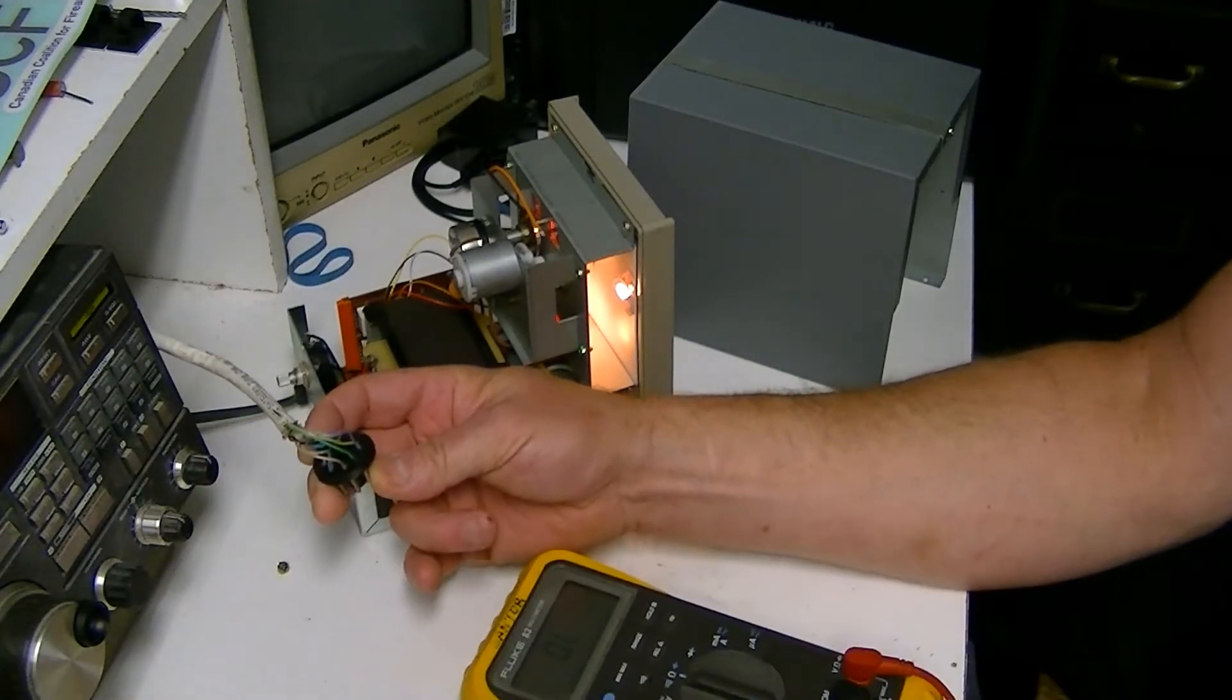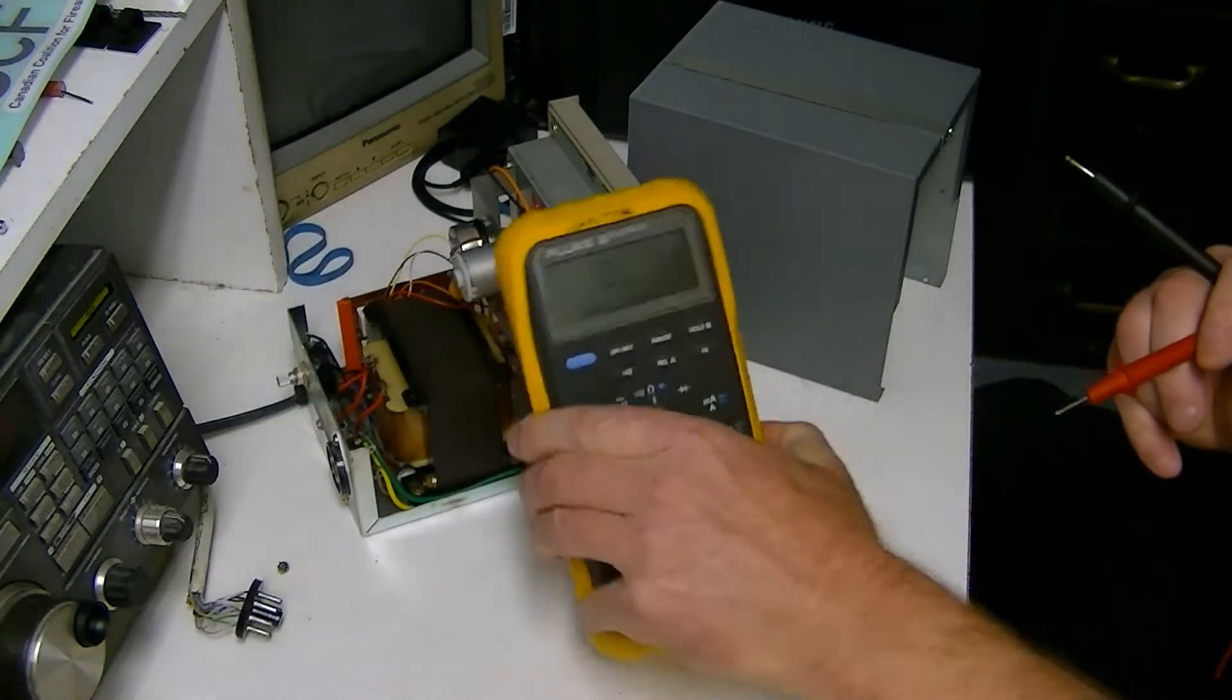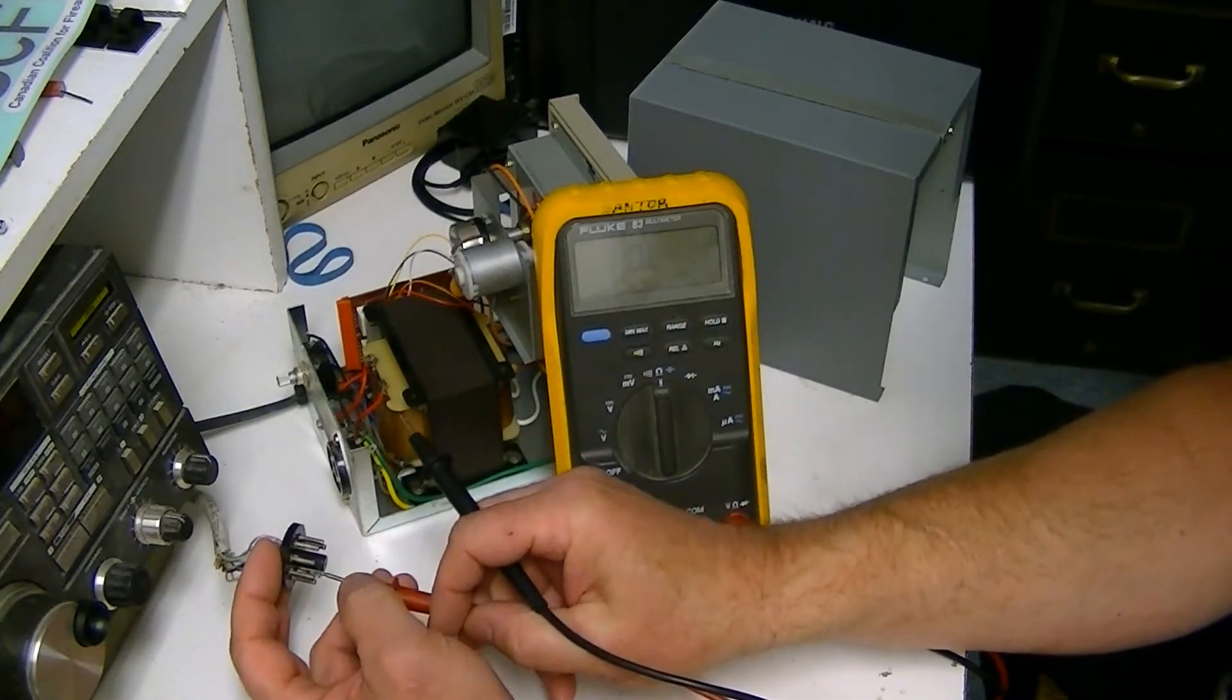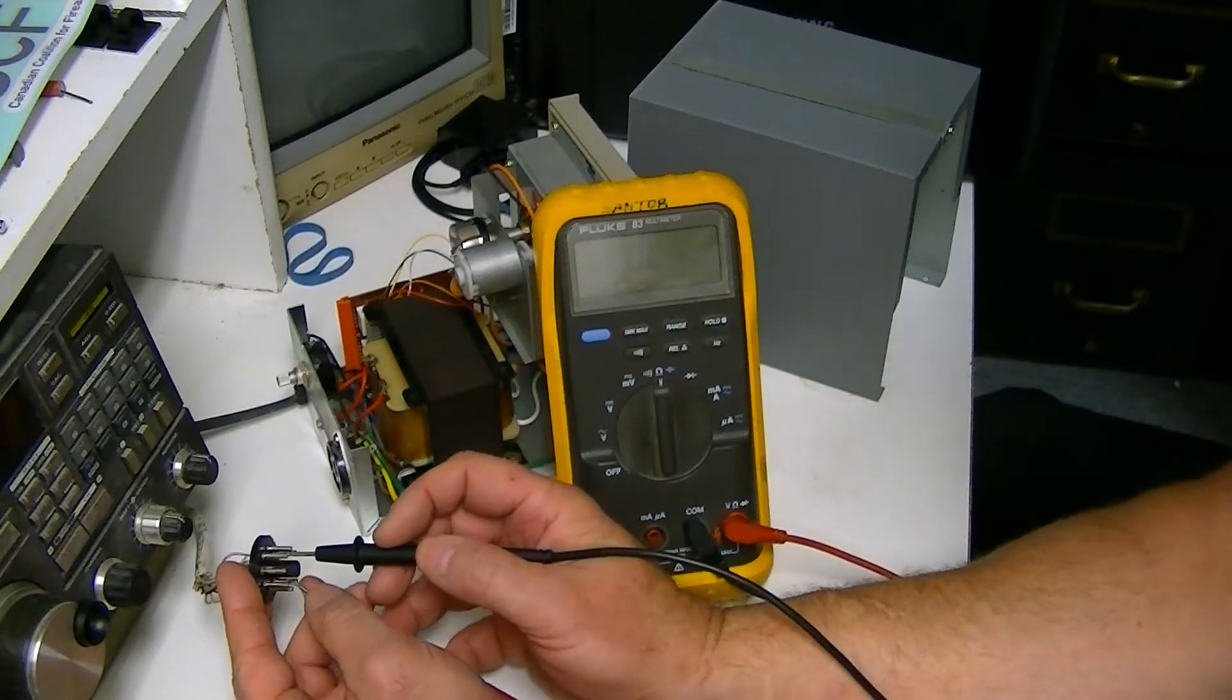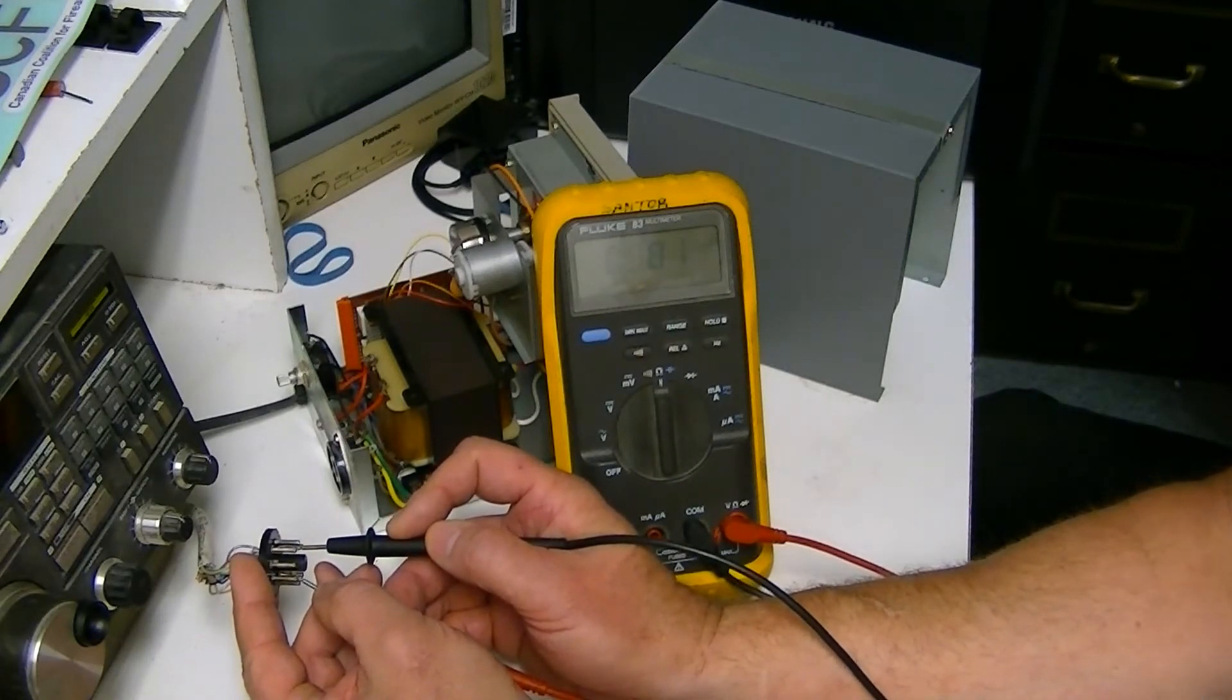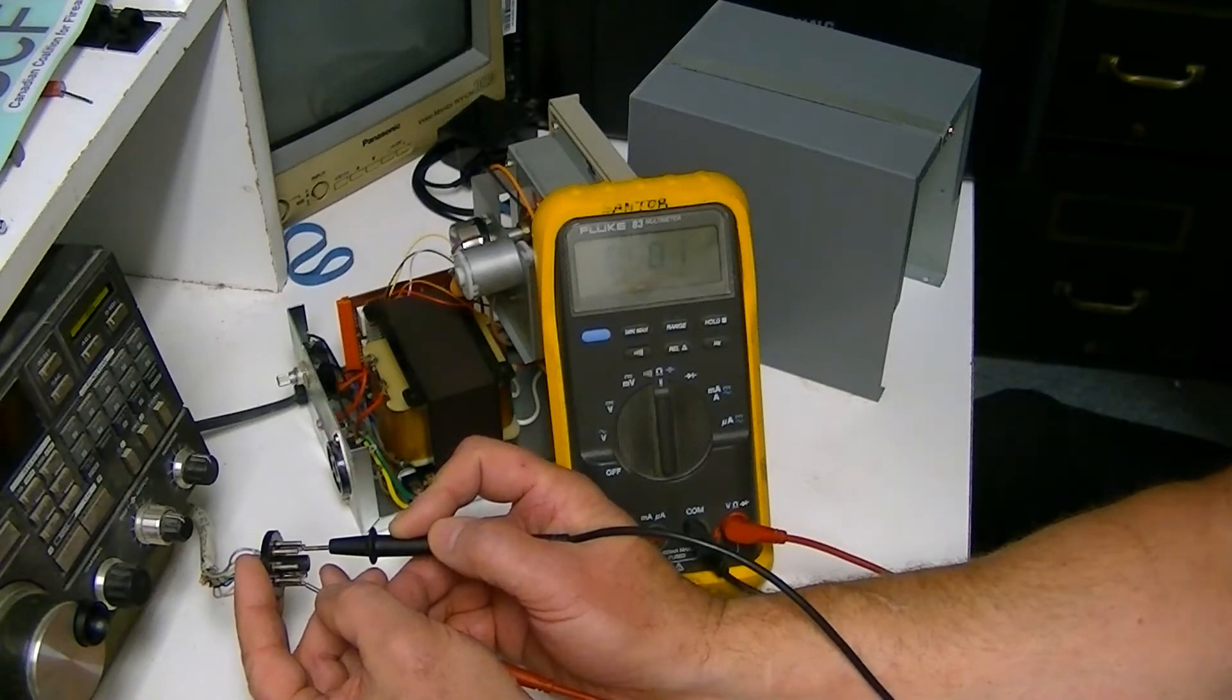So if you go across with your DVM, you'll get 500 ohms across the potentiometer. There's 581. It's a 600 ohm potentiometer according to the schematic I found on the web.